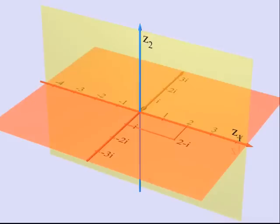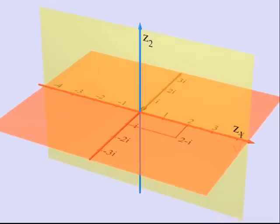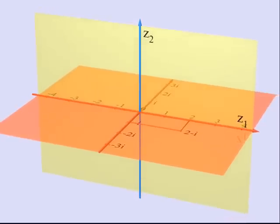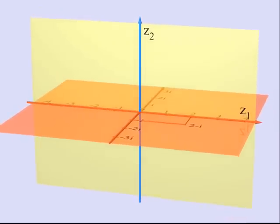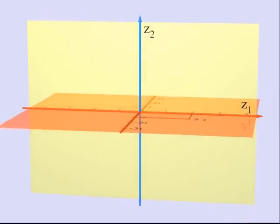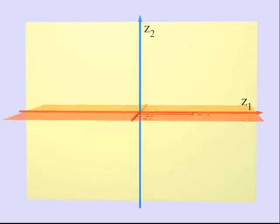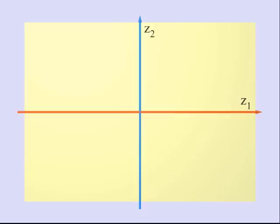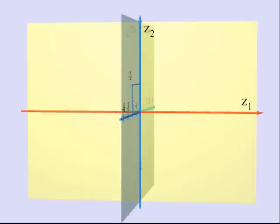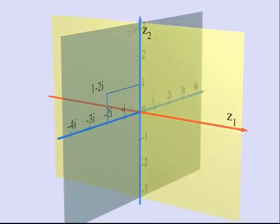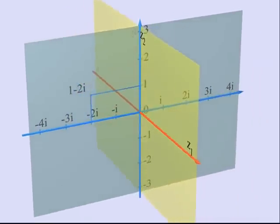For instance, here you see the point 2-minus-i on the first axis. The same is true for the other axis, the y-axis. Here we can see the point 1-minus-2i on this axis.